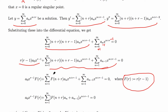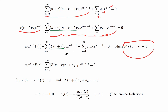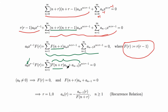The leading term gives a₀·xʳ⁻¹·F(r), and the combined sum has coefficient F(n+r)·aₙ + aₙ₋₁ = 0 for n ≥ 1. Since a₀ ≠ 0 (otherwise the solution is trivial), setting F(r) = 0 gives the indicial equation, and the combined coefficient equation is F(n+r)·aₙ + aₙ₋₁ = 0 for n ≥ 1.